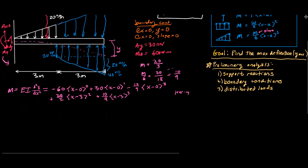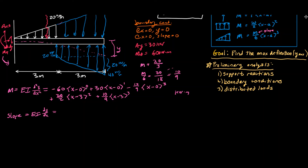Now we need to integrate this to get the slope equation. That's EI times the first derivative - we're integrating with respect to x. X minus zero is really just x, and x to the zero is one. So integrating negative 60 with respect to x gives negative 60x. Then we get plus 15x squared. Minus - we have 10 over nine to the third, so we integrate: this becomes to the fourth, giving 10 over four times nine, which is 10 over 36. X minus zero is really just x, so we write x to the fourth power.